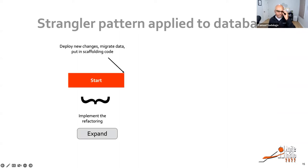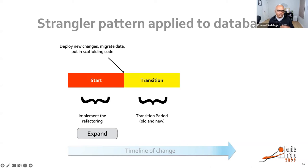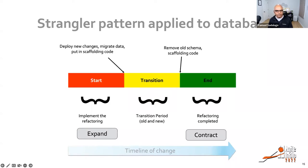We are applying the strangler pattern to the database. In the beginning — the expand phase — you implement the refactoring and expand the database. Then there's a transition period when both the old design and the new design are working at the same time, similar to a deprecated class and a normal class running in parallel. At some point, you delete the old side and what's left is the new design. So if you had two views and deleted the old one, now only the new view remains.